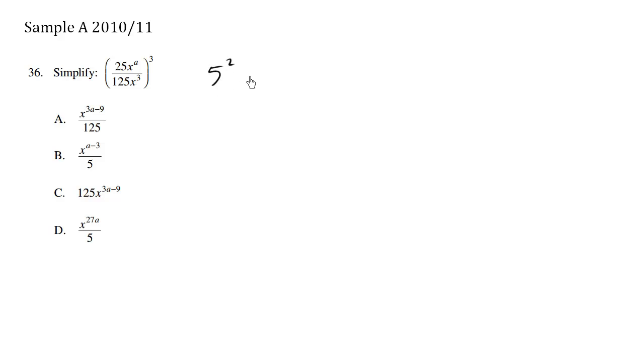So we have 5 squared x to the a, and all of this is going to be to the exponent 3, over 5 to the 3, which is 125, x to the 3. 5 times 5 is 25. 25 times 5 is 125. Let's see if this helps us.